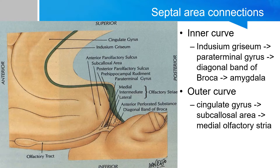In the outer curve, the cingulate gyrus becomes eventually in continuity with the subcallosal area, and they merge together. This then goes on to meet the medial olfactory striae. The olfactory bulb extends to become the olfactory tracts, and at the end, they split to become the medial olfactory striae and the lateral olfactory striae.